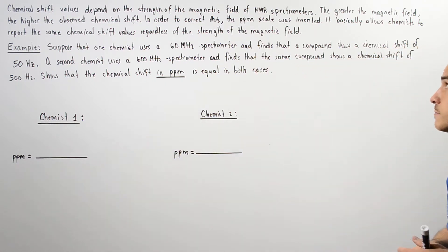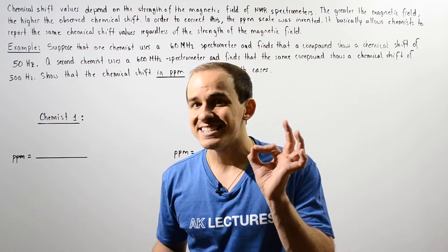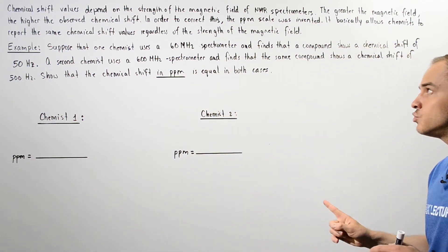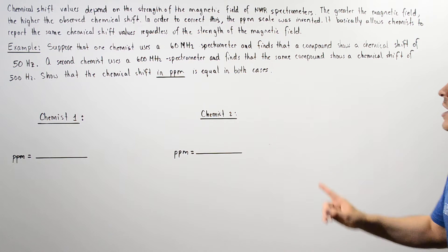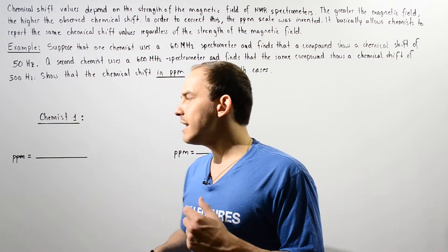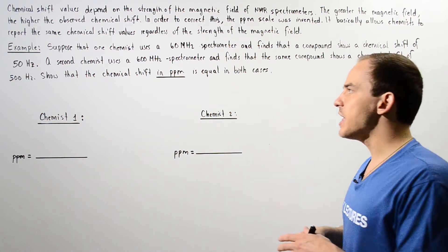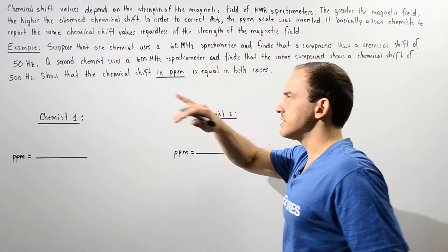Now to fix this problem, the PPM scale is used. It basically allows chemists to report the same identical chemical shift values regardless of the strength of the magnetic field inside that proton NMR spectrometer. And to see exactly what we mean by that, let's take a look at this example.